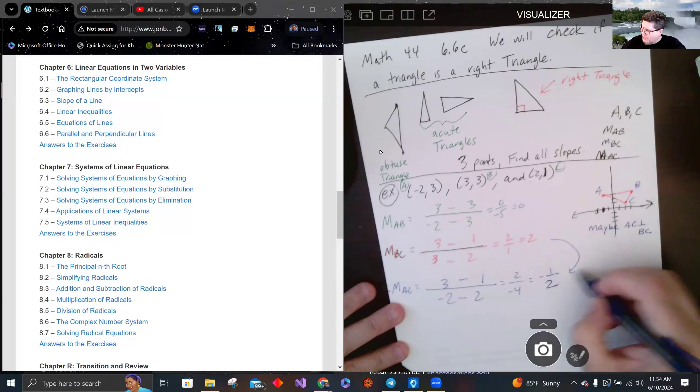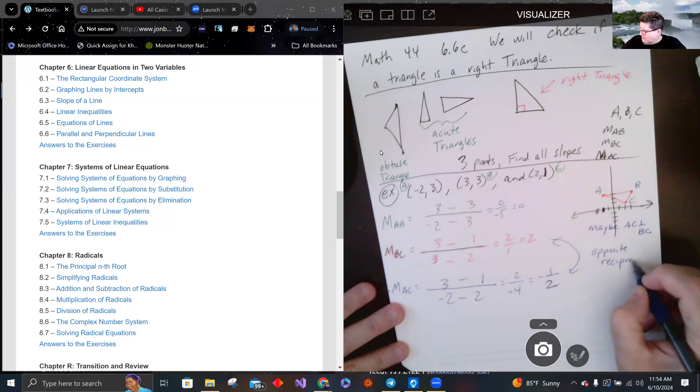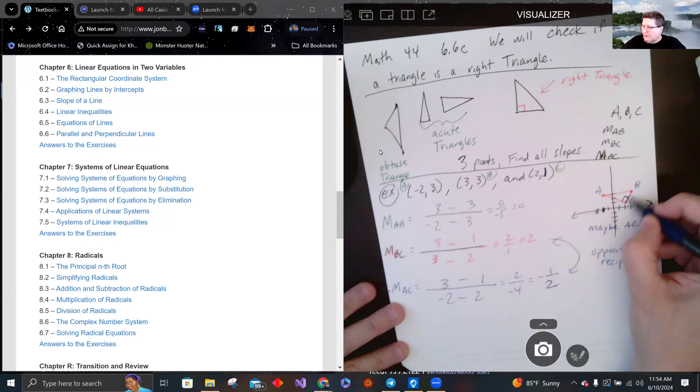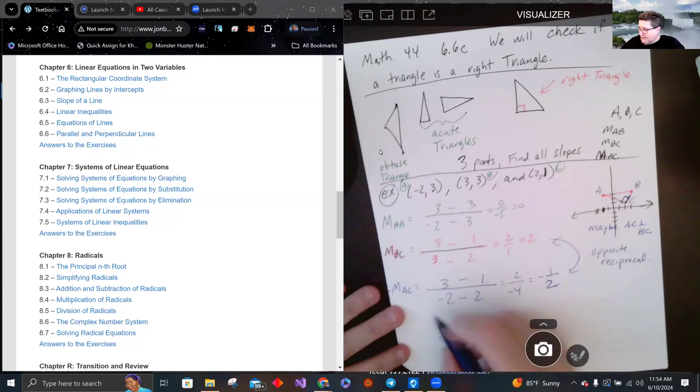And these two are opposite reciprocals. So that does make this a right triangle. They show a right angle, they put a square in the corner just so you can see. This is a right triangle.